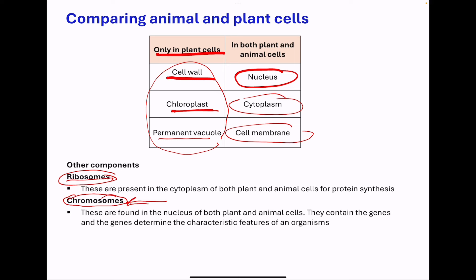Remember, the genes determine the characteristics or features of organisms. For example, they can determine in humans your hair color, your eye color, and so on. These are found in the nucleus, and they make up your DNA.